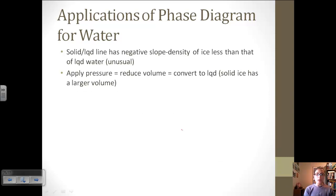If we apply pressure to ice—think about ice skating—we're going to reduce the volume. If we reduce the volume, we're going to convert to a liquid because solid ice, because of its lower density, occupies a larger volume than liquid water. So we're going to convert it to a liquid.